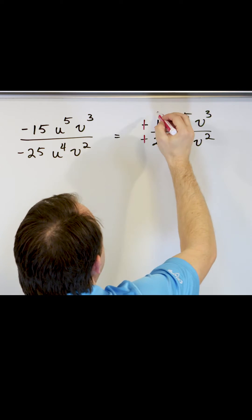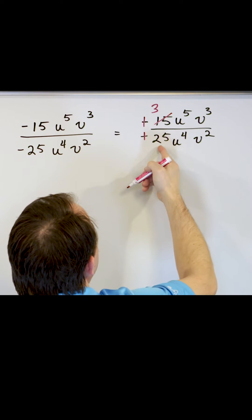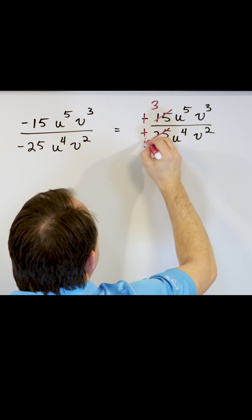And then for the 15, we'll divide by 5, giving us 3. The 25 divided by 5 will give us a 5.